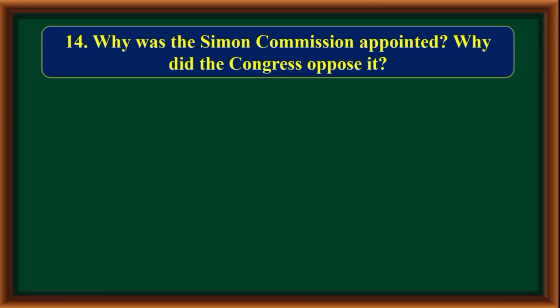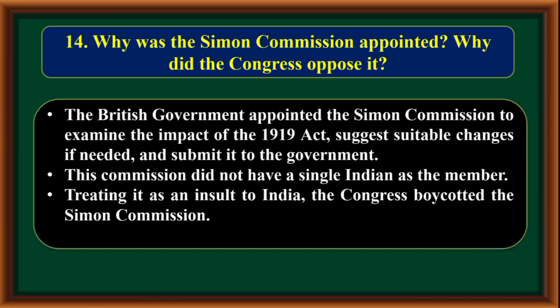Why was the Simon Commission appointed? Why did the Congress oppose it? The British government appointed the Simon Commission to examine the impact of the 1919 Act, suggest suitable changes if needed, and submit a report to the government. This commission did not have a single Indian as a member. Treating this as an insult to India, the Congress boycotted the Simon Commission.